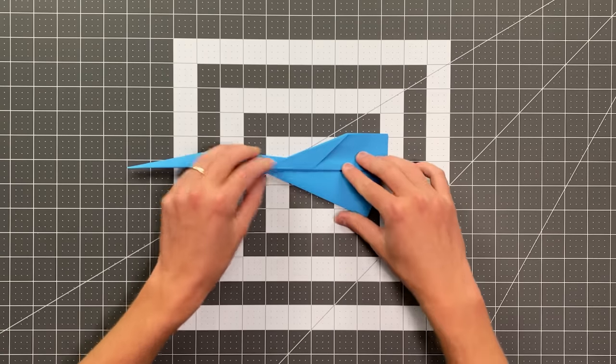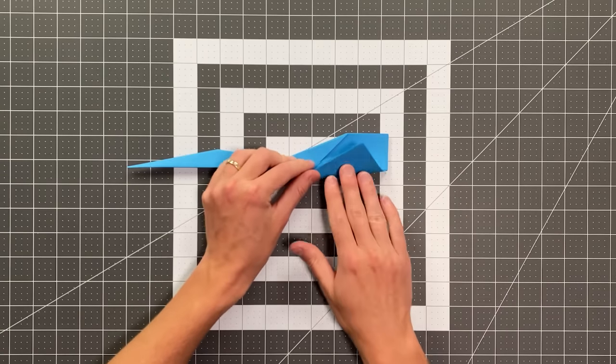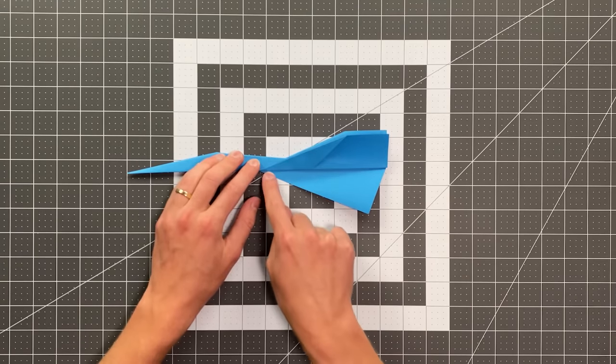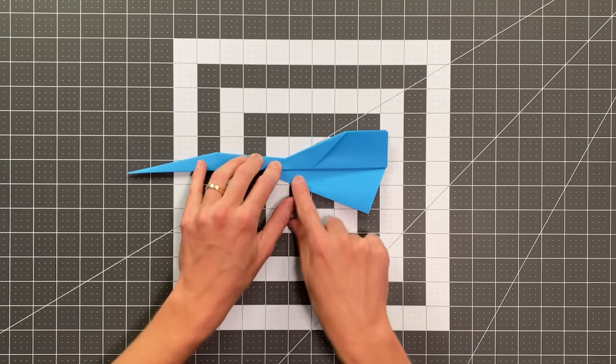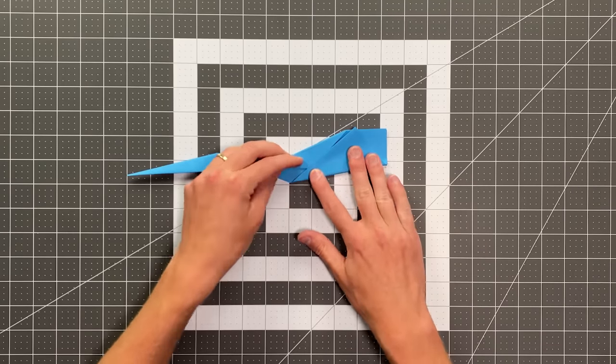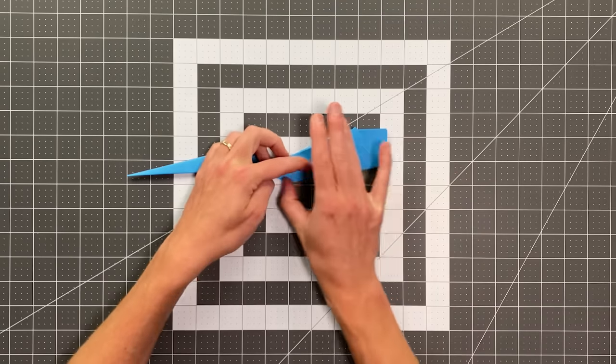And now go ahead and fold something like this, where you're starting just a little bit down from this point here. And then fold right up to this corner. Just like that.